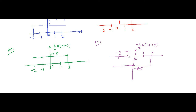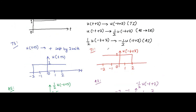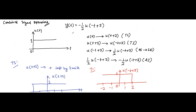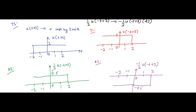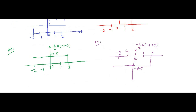This is the final amplitude-inverted signal. So the whole operation y(t) = -½u(-t+2) has to pass through these four individual steps to get the final resultant signal.